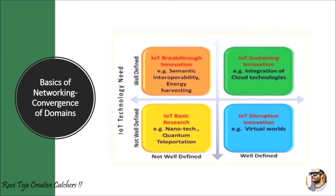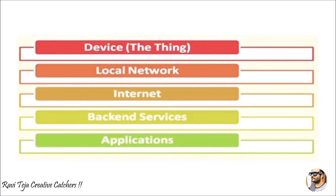In IoT technology, some areas are very well defined and some are not at all defined. Looking at the graphical representation in chart form, there are a few well-defined and a few not well-defined areas. Energy harvesting can be considered as one of the IoT breakthrough innovations, and integration of cloud technologies is also very well defined. Not well-defined areas fall under IoT research, such as nanotechnology or teleportation. Well-defined areas include the virtual world.